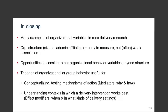In closing, there are many examples of organizational variables in care delivery research. While some organizational structure characteristics like size or academic affiliation are easier to measure, they may not necessarily have direct associations with some of the outcomes we're interested in. There are definitely lots of opportunities to improve and enhance our measurement of organizational processes in our care delivery research. One way to do this is to draw from organizational theories and organizational behavior theories, particularly when conceptualizing and testing mechanisms of action — mediating variables and moderating variables that will help us understand in what context these different interventions work best.